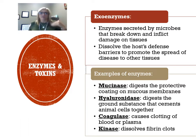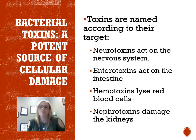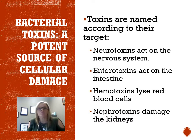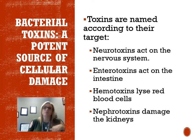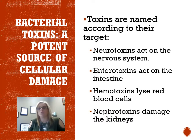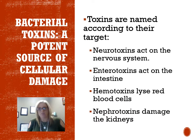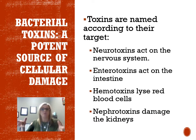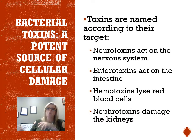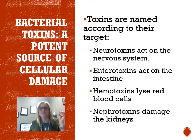Toxins are also named according to their target. A toxin is a specific chemical product of a microbe that is poisonous to other organisms. Neurotoxins work on the nervous system. Enterotoxins act on the intestines. Hemotoxins affect red blood cells — heme referring to hemoglobin. Nephrotoxins affect the kidneys — nephron referring to kidneys. It's really important to know what each toxin is going to affect because this is what drives symptoms.